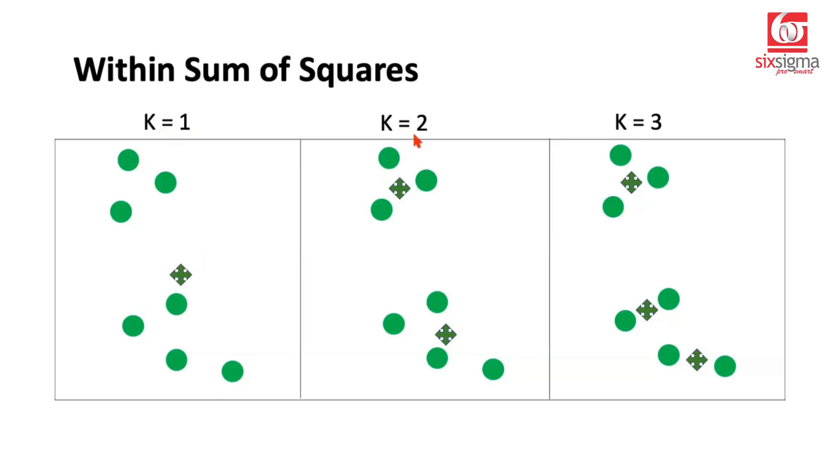Scenario two is where we choose to have two clusters. The value of K is two. These markers here represent the centroid. And scenario three is when we choose to experiment with three clusters. So we have the first centroid, second centroid, and the third centroid.